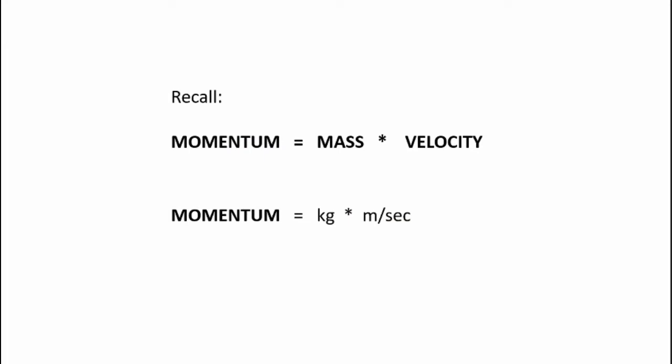Now recall the momentum is equal to mass times velocity. Now the propeller imparts velocity to the air and the air has mass so the propeller is imparting momentum to the airflow and the units of momentum are kilograms times meters per second.